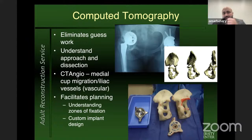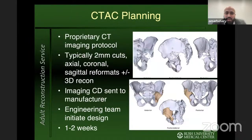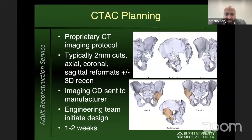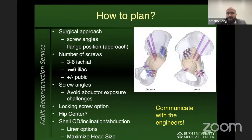If you're doing a custom implant, you'll need a CT scan with a specific protocol — typically 2mm cuts with different reformats and a 3D reconstruction — to actually design the implant. You obtain the CT scan and send it to the manufacturer. The engineering team drafts an initial plan, and then you communicate back and forth with the engineers — a really important part of planning — to ensure you have the right implant. Ultimately, you finalize the design and the implants are made.